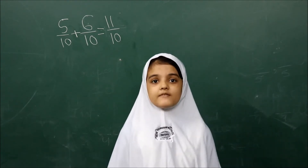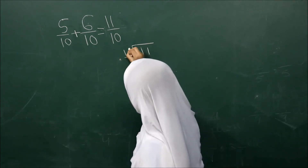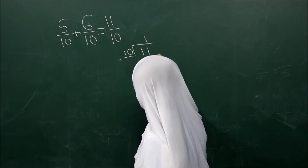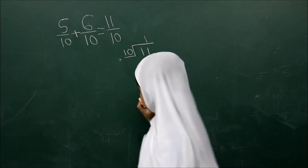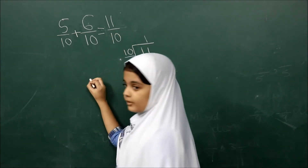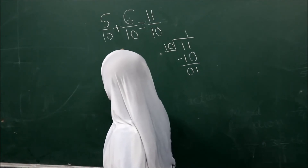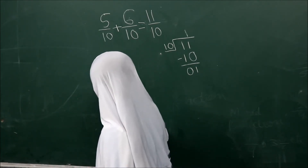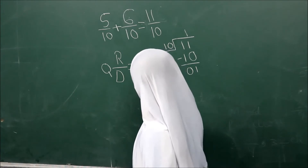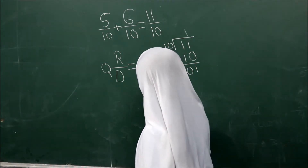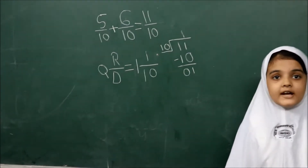To convert it to a mixed fraction, we divide the numerator by the denominator. 11 divided by 10: 10 ones are 10, remainder 1. The method to write a mixed fraction is quotient, remainder, and divisor. So we write the mixed fraction as 1 and 1 by 10. We read it as '1 and 1 by 10'.